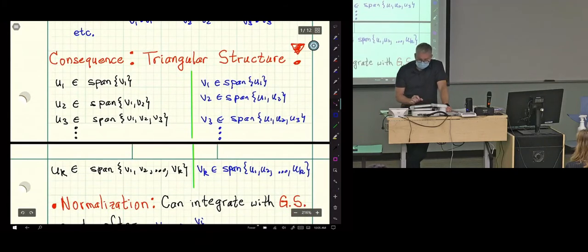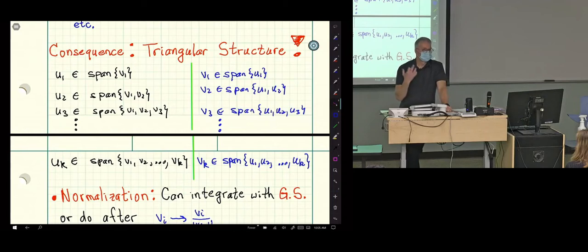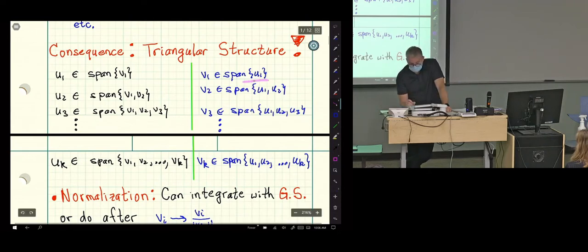The structure you get is triangular, and that should cause some warm feelings in your heart, because we're really good at dealing with triangular matrices. So you got your vectors. You start with U1, U2, U3, up to dot dot. V2 is a linear combination of U1 and U2. And so that's where this span is really nice notation. V3 is a linear combination of the first three vectors you had in your set, and that structure continues all the way down. So that's the triangular structure.